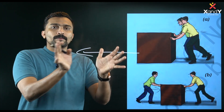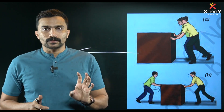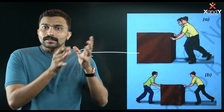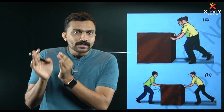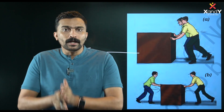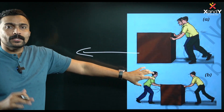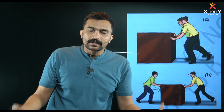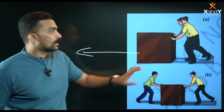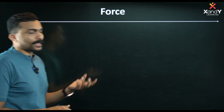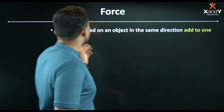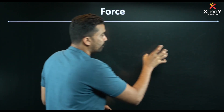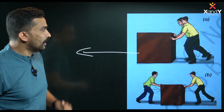We have two types of quantities: scalar quantities and vector quantities. Scalar quantities have only magnitude — like length. Vector quantities have both magnitude and direction. Force is a vector quantity, meaning it has both magnitude and direction. If the direction is random or opposite, that matters for the result.